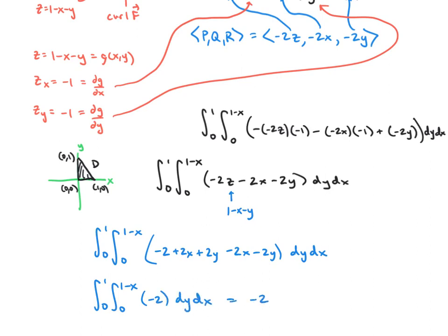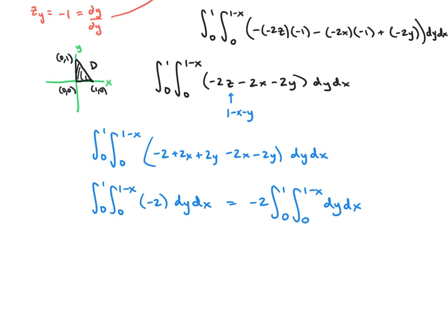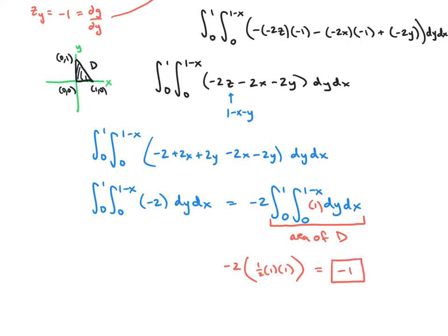There's a shortcut we can take here. The double integral of 1 over D equals the area of D. And D is a triangle, graphed right here. So we have -2 times the area of D, which is ½ base times height = ½. That gives us a final answer of -2 × ½ = -1. That is example 2 in section 13.7. The last video in this section will be example 3.